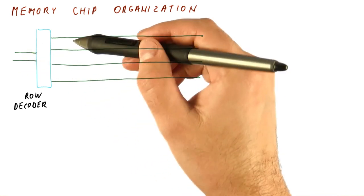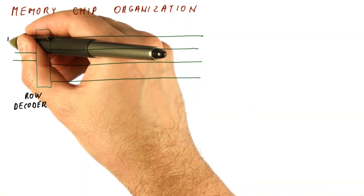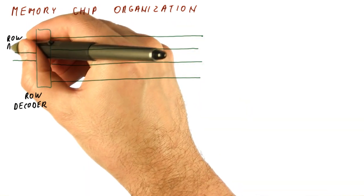So this is a real decoder. You give it a number, it activates a line that corresponds to that number. In memory, we call this row address.